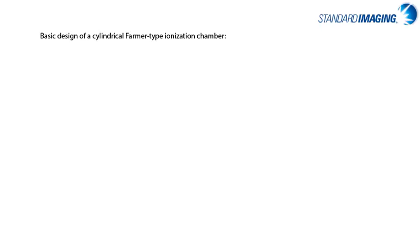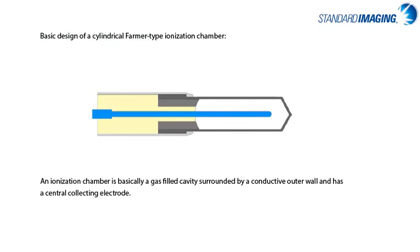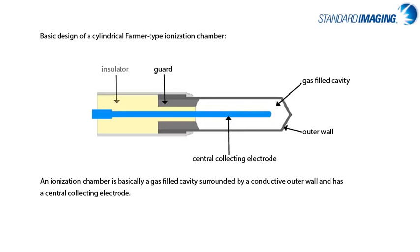Consider the image of a basic thimble-type ionization chamber. There are three main parts to an ion chamber: a gas-filled cavity, an outer wall, and the central collecting electrode. The other absolutely essential component is a guard, which could actually be considered the most important component, as it not only guards your desired signal of interest but also defines the collecting volume.